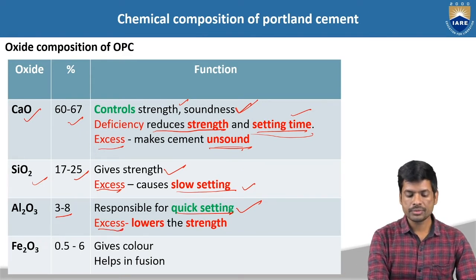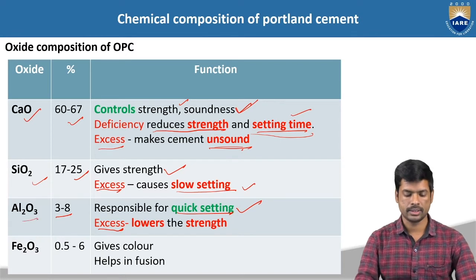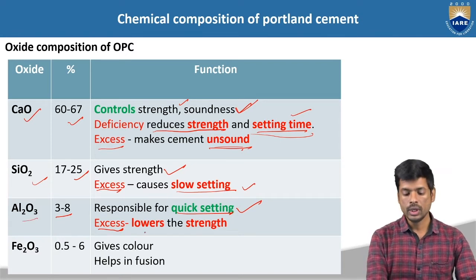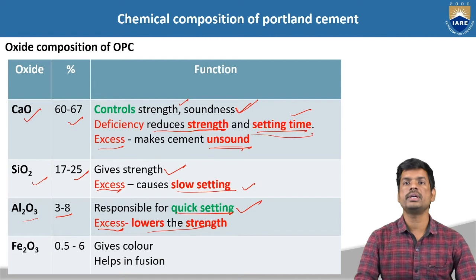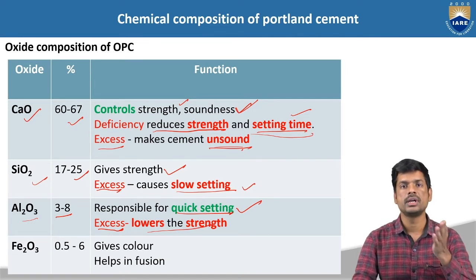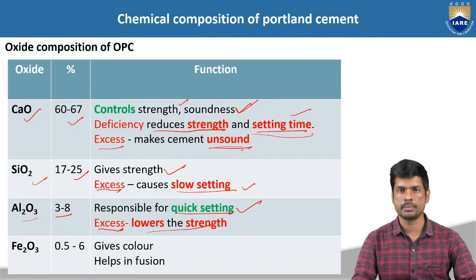Excess amount of this particular aluminum trioxide, Al2O3, is going to lower the strength. The strength of the particular cement will be reduced if you add excess amount of aluminum chemical.